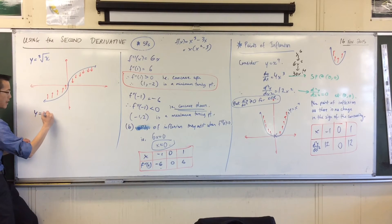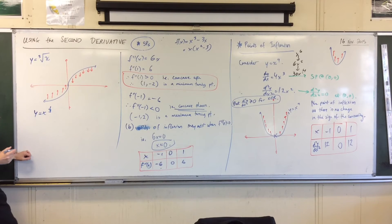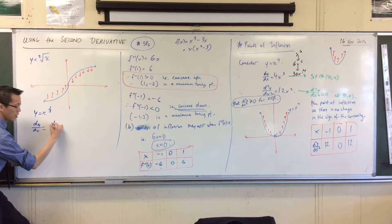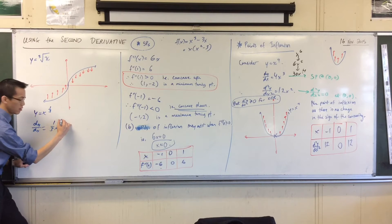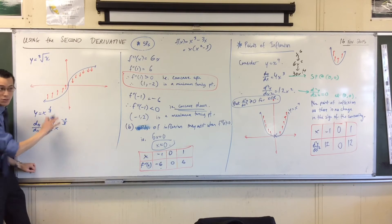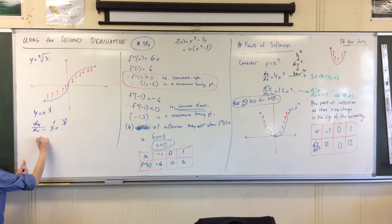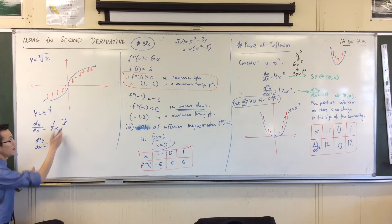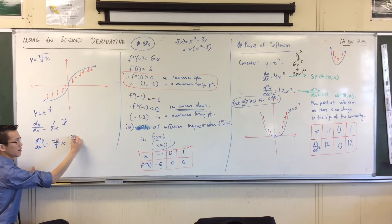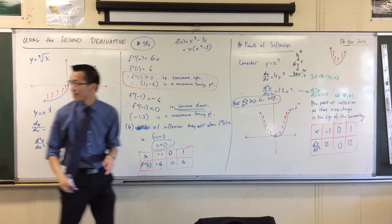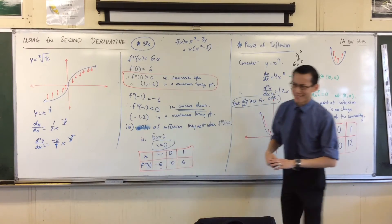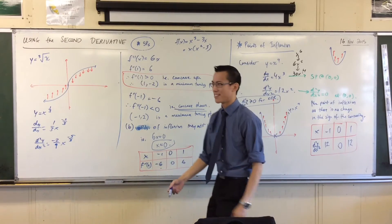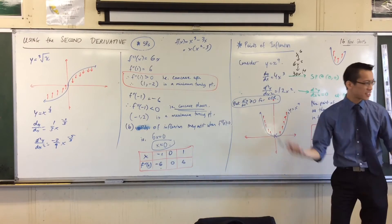Here's the function, right? Rehearse with me again, how we get the first and second derivatives. What is the first? A third. A third. X to the minus two thirds. Okay, I'm just going to be a bit lazy. I'm just going to leave it like that so that I can differentiate again. Minus two on nine. Multiply. Minus two on nine. X to the minus five thirds. Good.